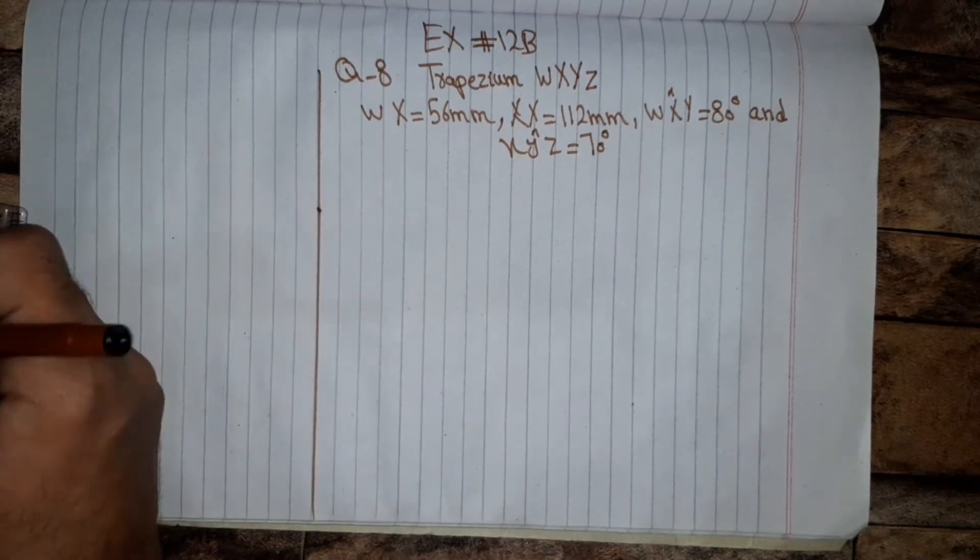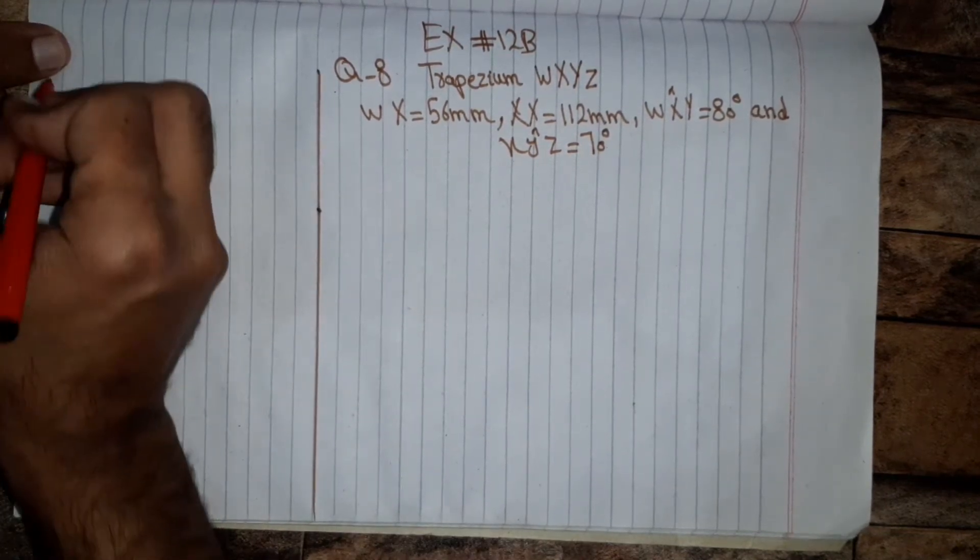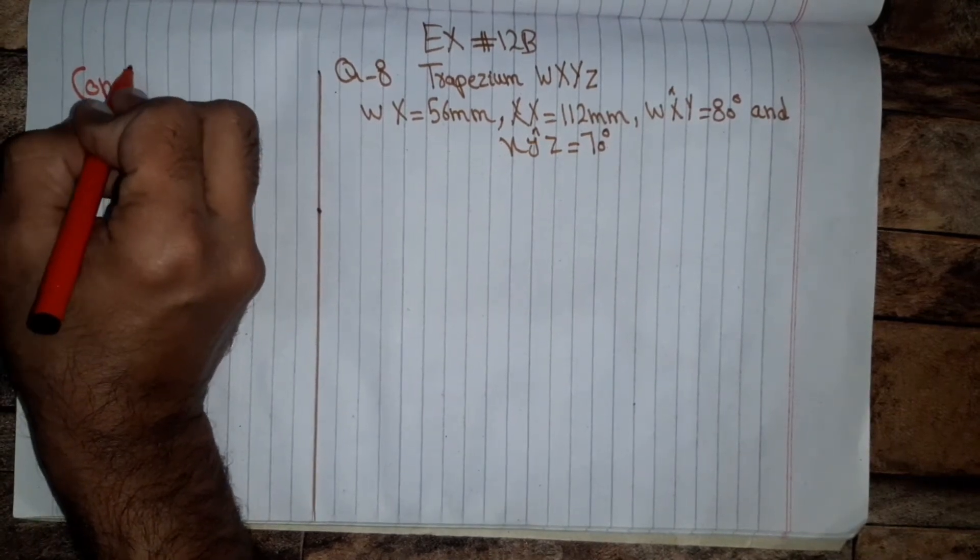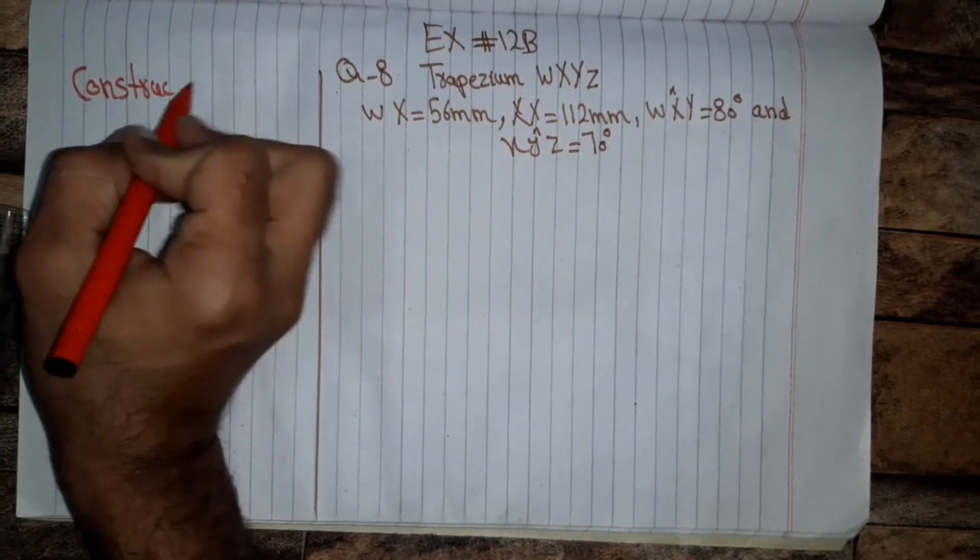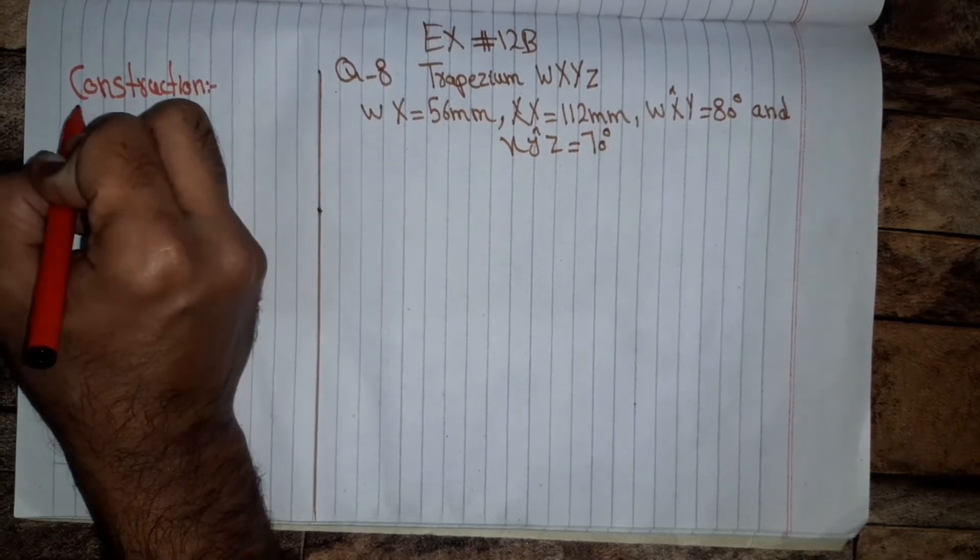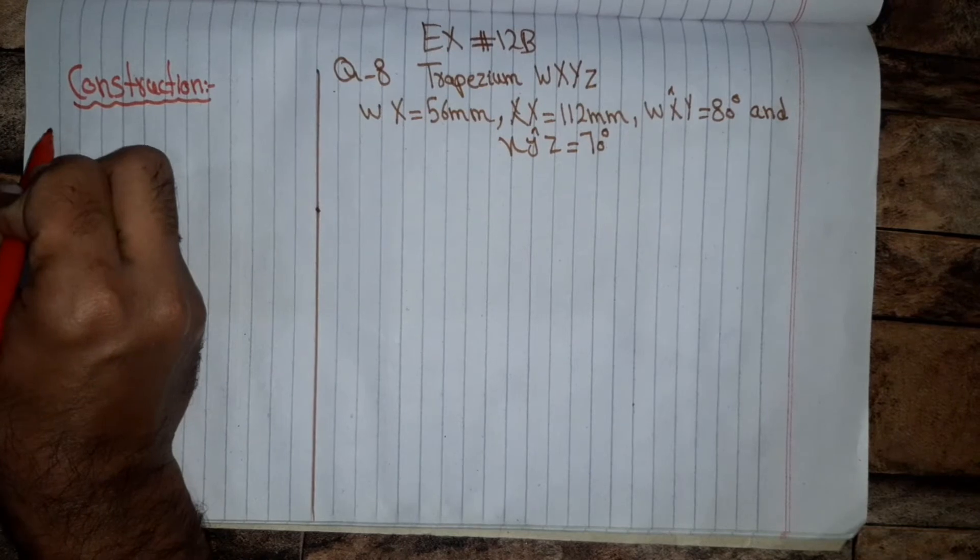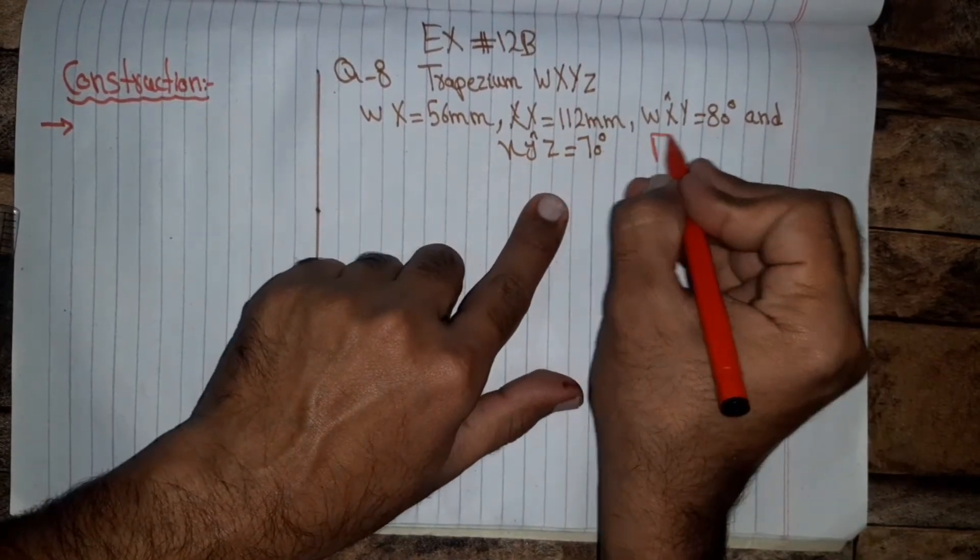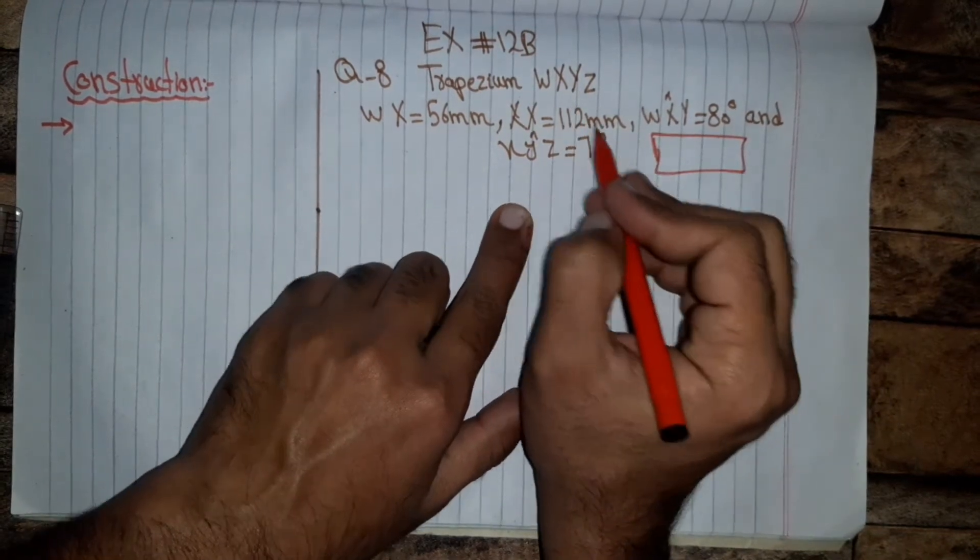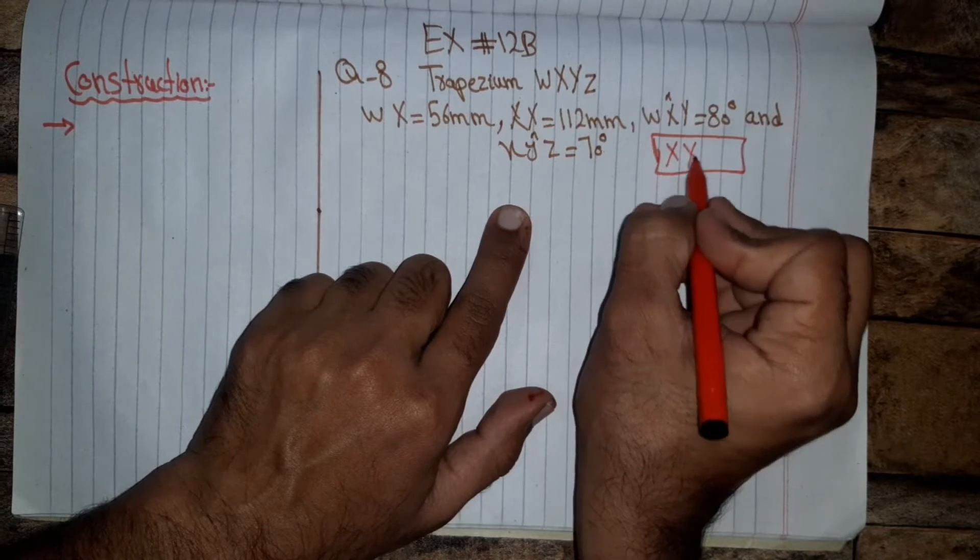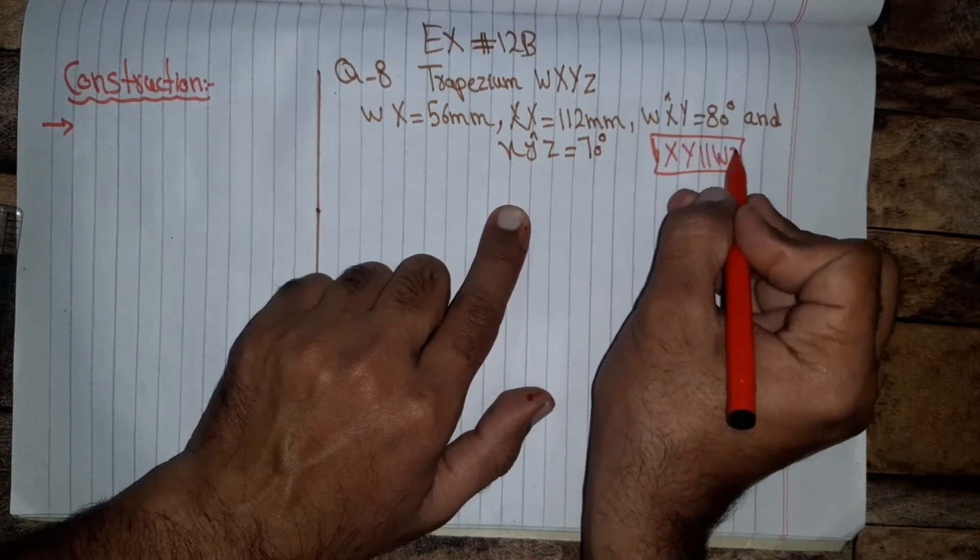So here we draw the trapezium and here we write steps for construction. First here we write steps for construction. First we assume that XY is parallel to WZ.